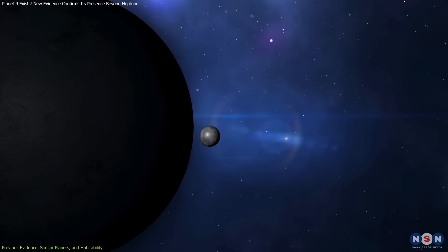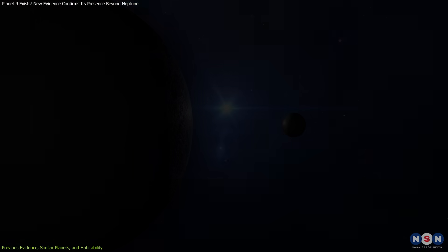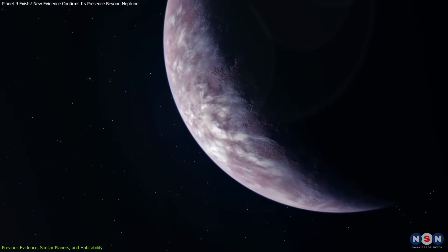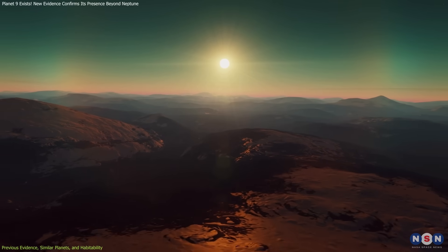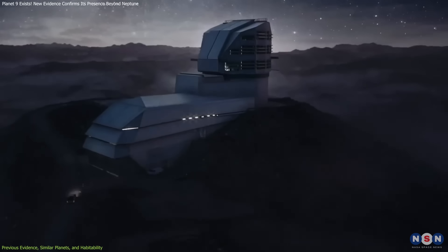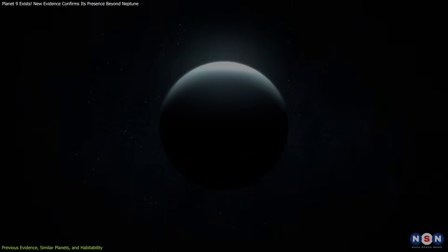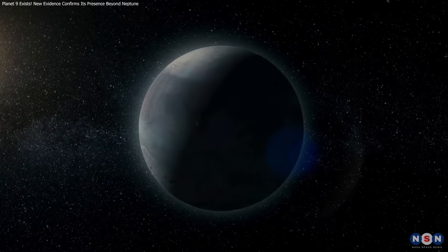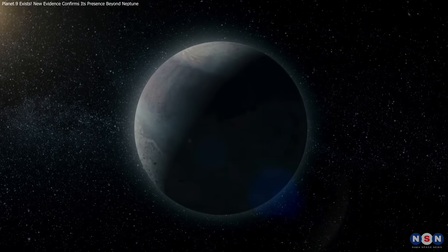This planet could teach us valuable lessons about the limits of habitability in the universe. Even if Planet Nine isn't suitable for life, studying its characteristics could help us better understand the kinds of environments where life might thrive or struggle to survive. As we await further observations from the Vera Rubin Observatory, the prospect of finally uncovering Planet Nine remains interestingly close.